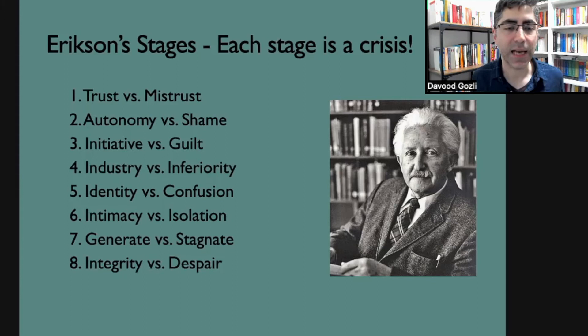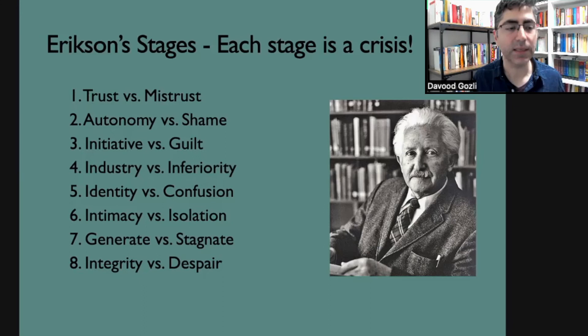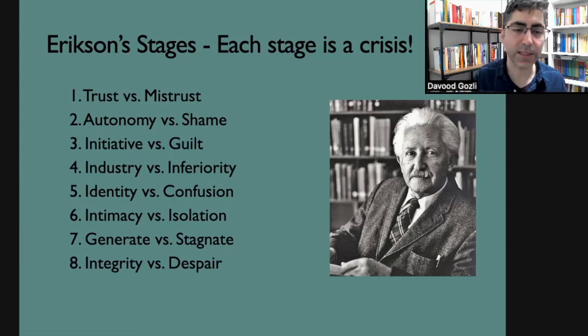A beautiful aspect of Erikson's stage model is that he characterizes each stage as a crisis. Throughout a person's life, each of us must go through each phase and face a crisis, which we can resolve either in an adaptive or maladaptive way. Erikson said the first stage is about establishing trust — general trust in the world, not just in the parents. The second stage presents a crisis between developing a sense of autonomy on one hand, or falling into shame on the other.